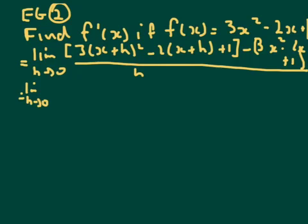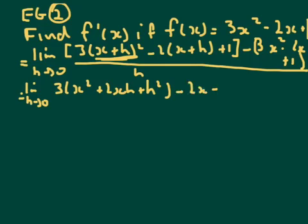So we've got 3, bracket, okay we're expanding a perfect square here. So it's 3, the first term squared, plus twice the product of the inside terms, plus the last term squared. Okay like that, we've got to close our brackets, minus, let's get rid of the brackets here, 2x minus 2h plus 1, minus.